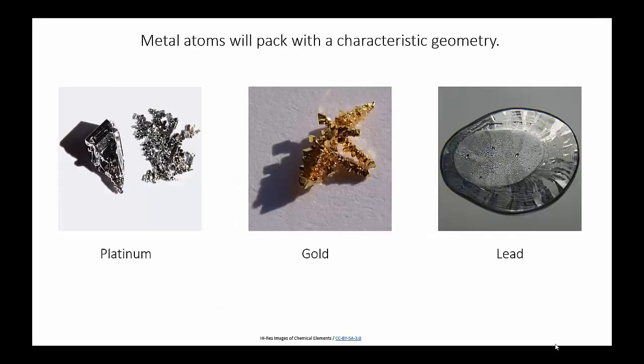Also like ionic substances, different metals can form lattices with different geometries. This also means that when metals are grown into crystals, they exhibit characteristic shapes.